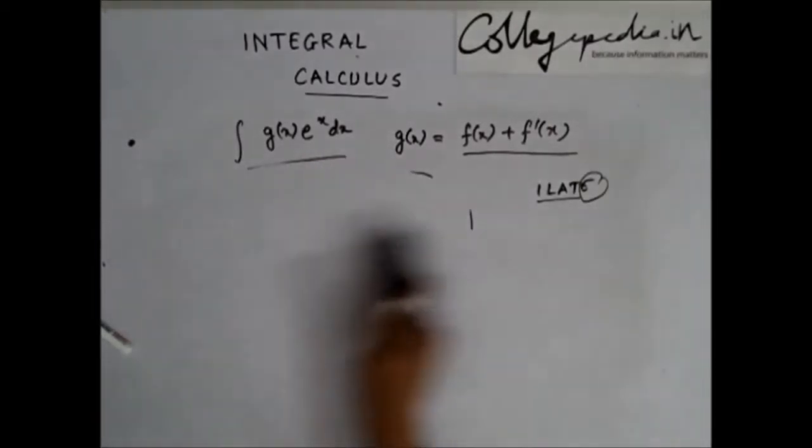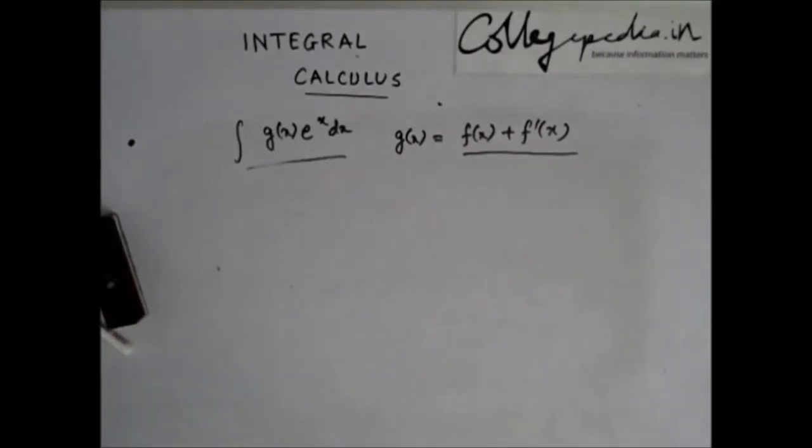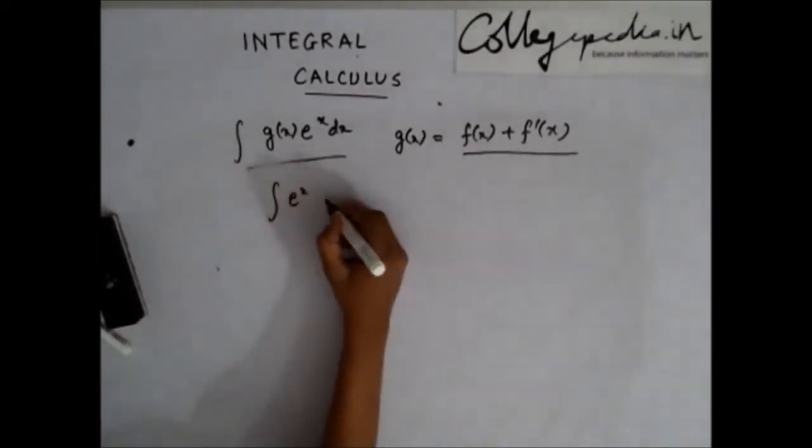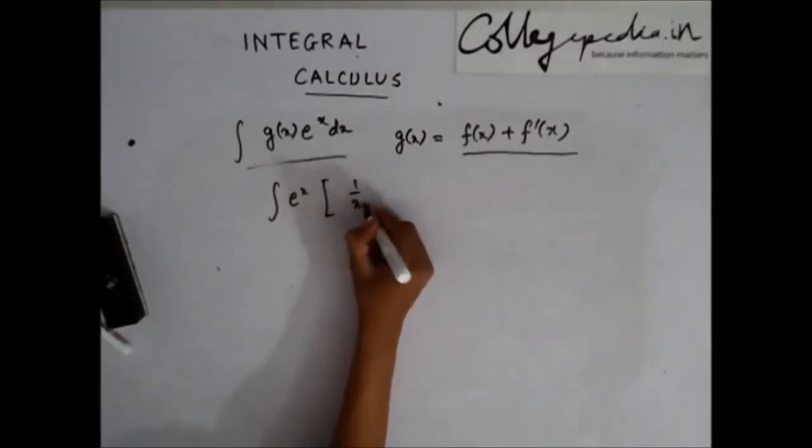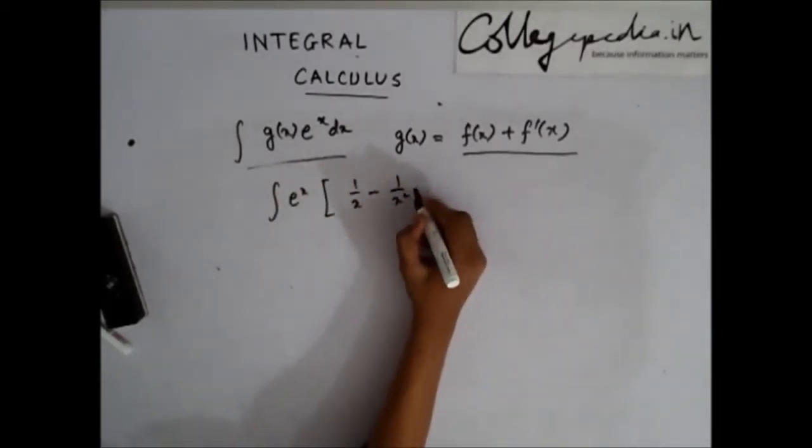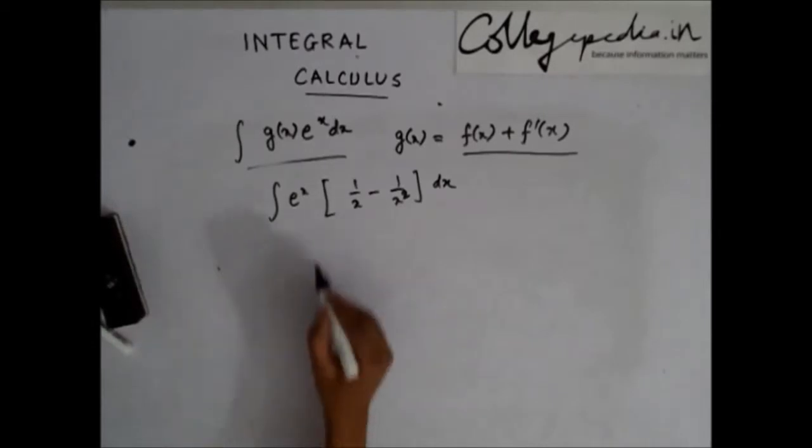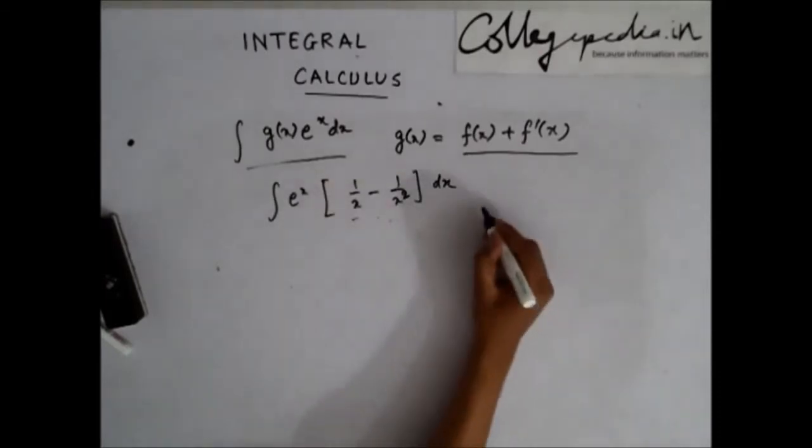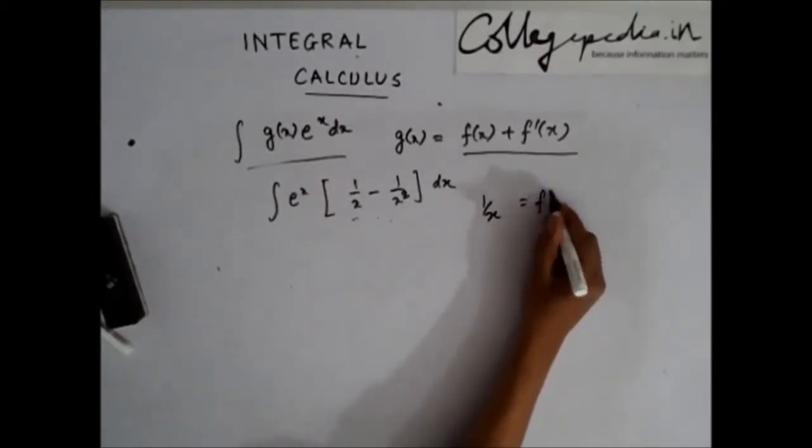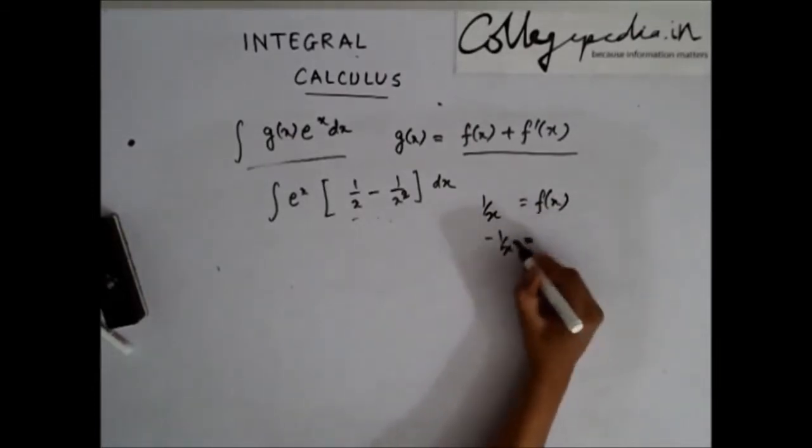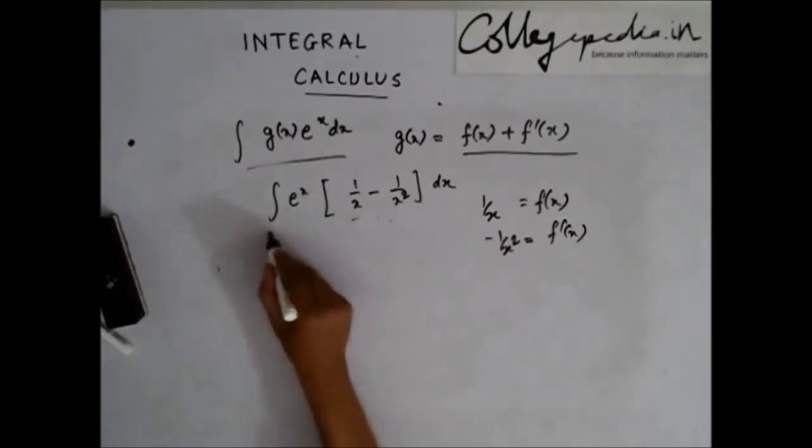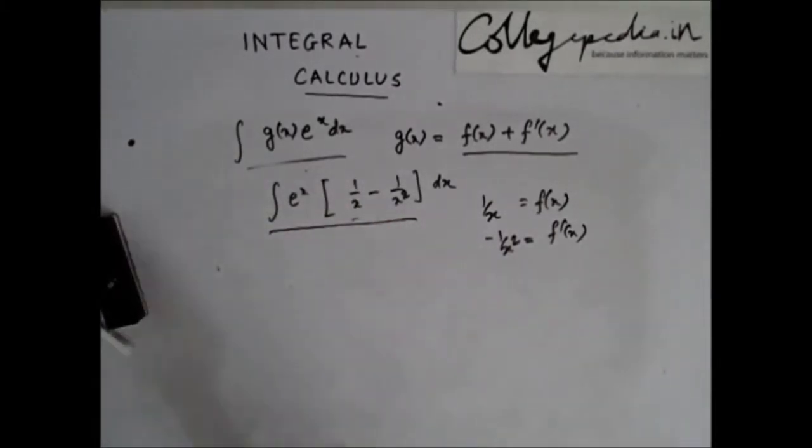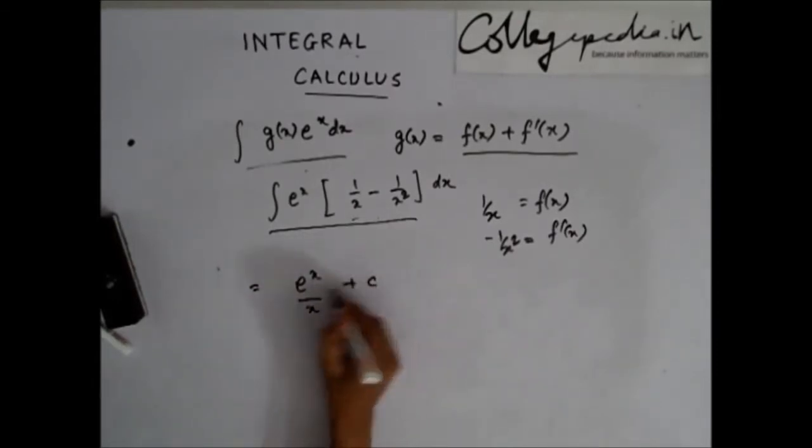An example to this could be, let's say, you are asked to integrate e^x multiplied by (1/x - 1/x²) dx. Here, you see that, if I take 1/x as f(x), then -1/x² is simply f'(x). So, this satisfies this form. So, I can blindly write that my answer is e^x/x + c. This is my solution.